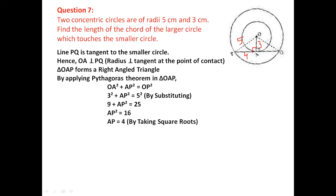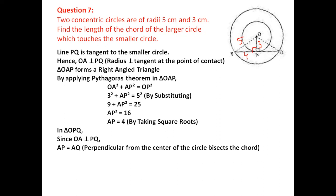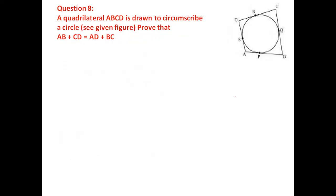For the outer circle, PQ is a chord and OA is a perpendicular from the center to the chord. A perpendicular from the center bisects the chord, so PQ = 2 × AP = 2 × 4 = 8 centimeters.